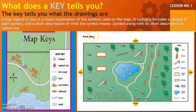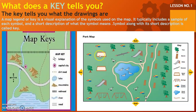Let's see one more example — this is the park map. In this park map, the keys are: tree, bench, slide, seesaw, sandbox, swings, flower garden, duck pond, and path — this is the path. So, the symbols are the small drawings, and a symbol along with a short description makes it a key.